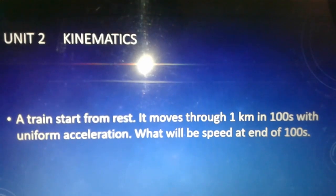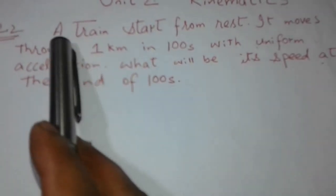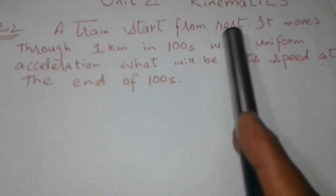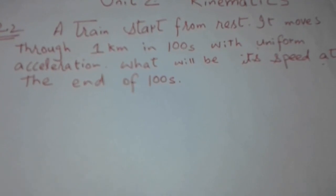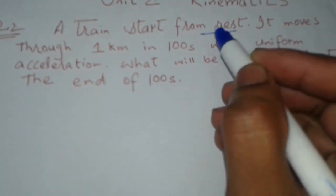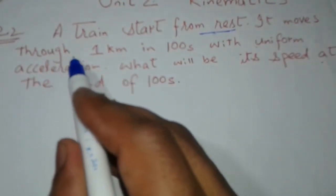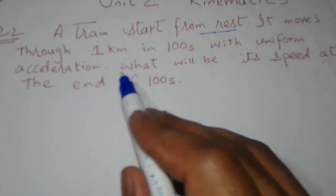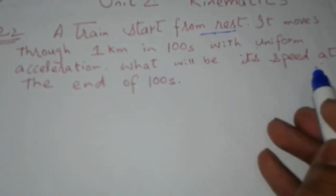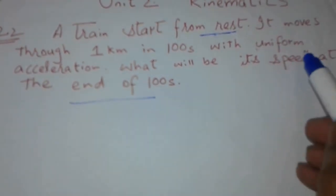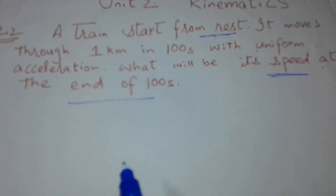With uniform acceleration, what will be the speed at the end of 100 seconds? First of all, we will understand the numerical. The train starts from rest — rest means its velocity is zero. It moves through 1 kilometer in 100 seconds with uniform acceleration. What will be its final velocity, i.e., speed, at the end of 100 seconds?